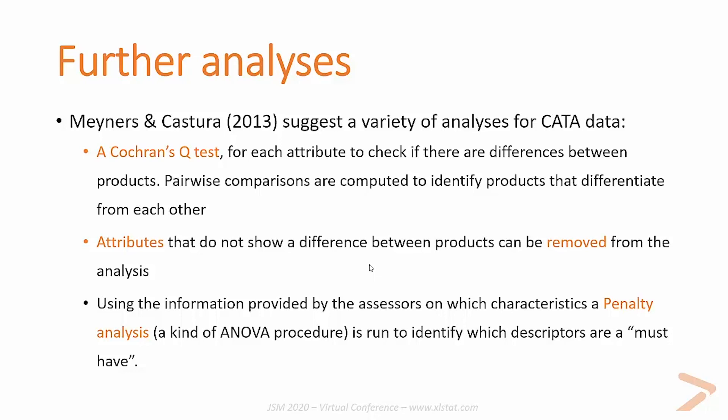Further analyses can be run. You can run a correspondence analysis on the cross-tabs mixing attributes and products, giving you a map where you can position the products and attributes. You can also run a penalty analysis — a kind of ANOVA — to identify which descriptors are must-have, nice-to-have, or must-not-have.